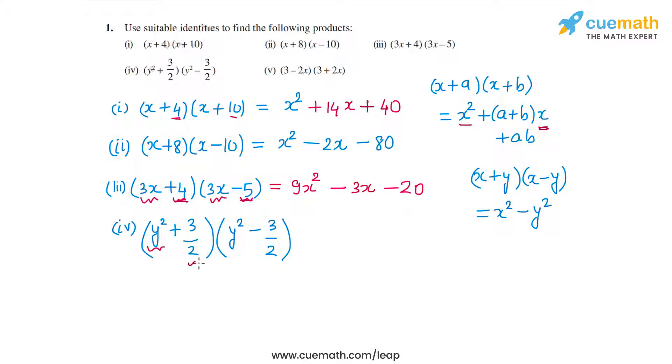In this case, I will have (y² + 3/2)(y² - 3/2) which leads to (y²)², so that's y⁴, minus the square of 3/2, so that's minus 9/4. So that's the product in the fourth part.